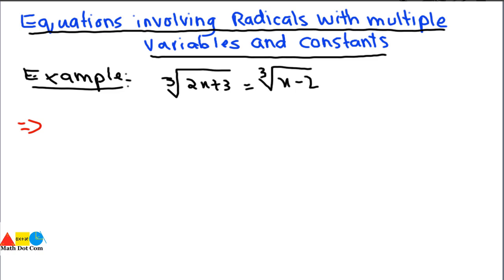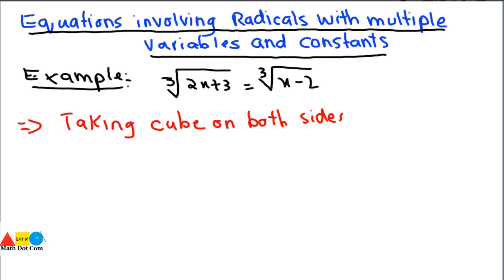As we have already seen in our previous lecture, whenever you come across a radical sign, you have to eliminate it by raising each side to the power equal to the index of the radical sign. Here we have a cube root, and the index is 3, so we will take the cube on both sides.